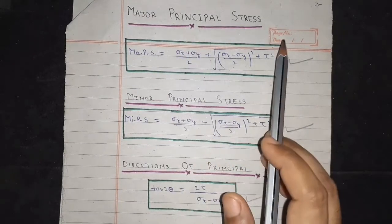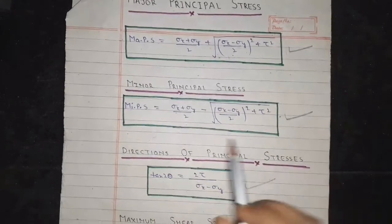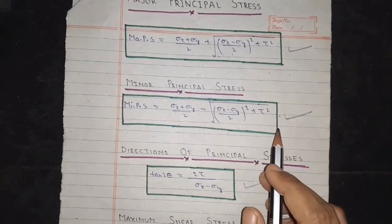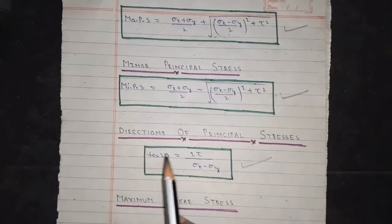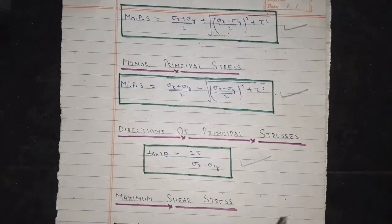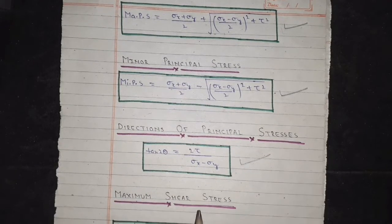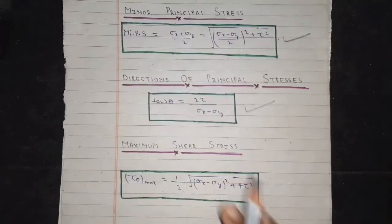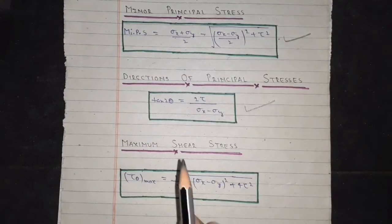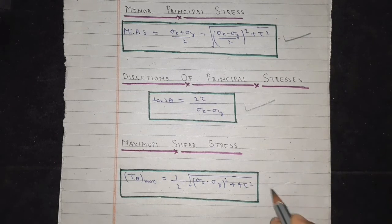The four formulas are: major principal stress formula, minor principal stress formula, direction of principal stresses formula, and lastly, the maximum shear stress formula.